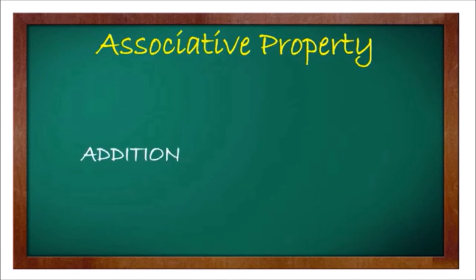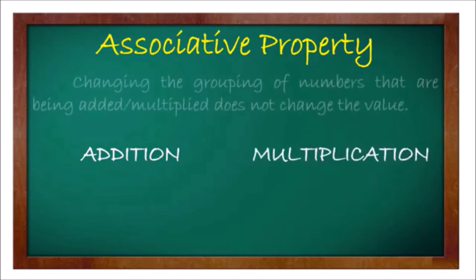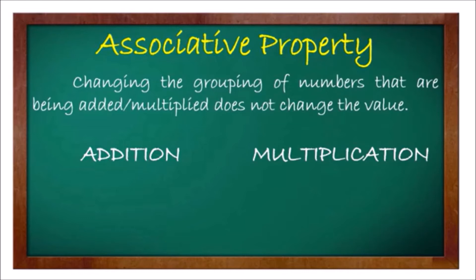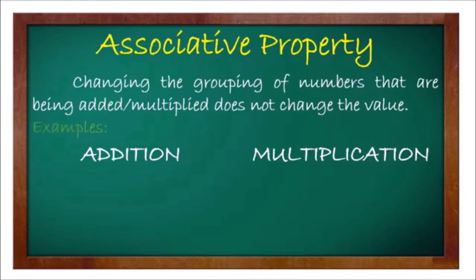The next property is the associative property of addition and multiplication. This property states that changing the grouping of numbers being added or multiplied does not change the value. Note that the commutative property involves only 2 numbers, while the associative property involves 3 or more numbers. Changing the grouping does not change the answer. For addition: (a + b) + c equals a + (b + c).